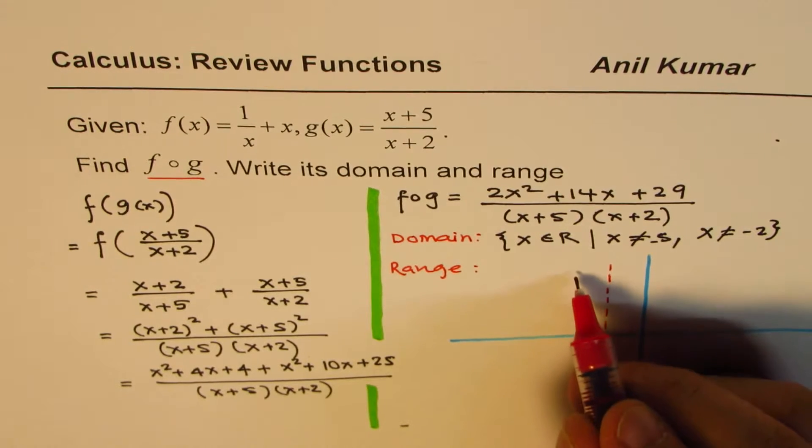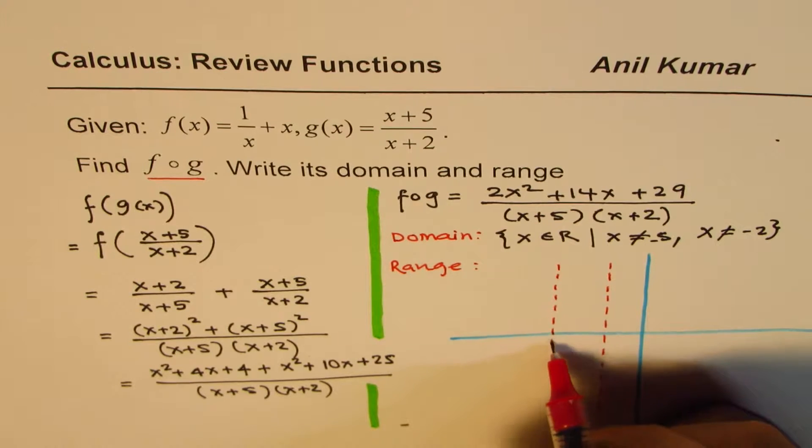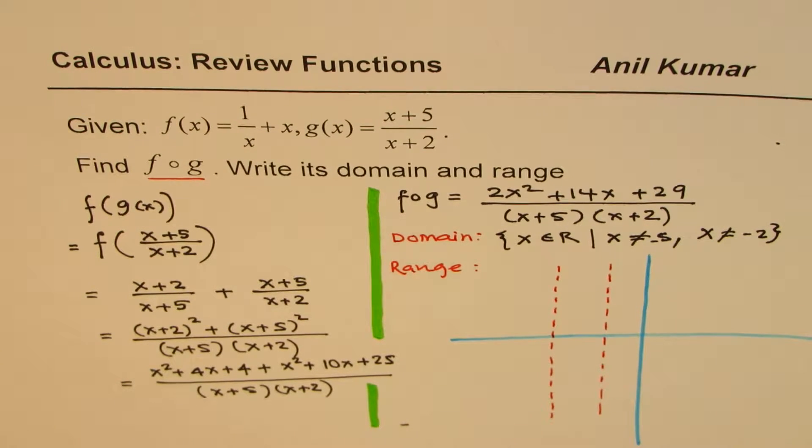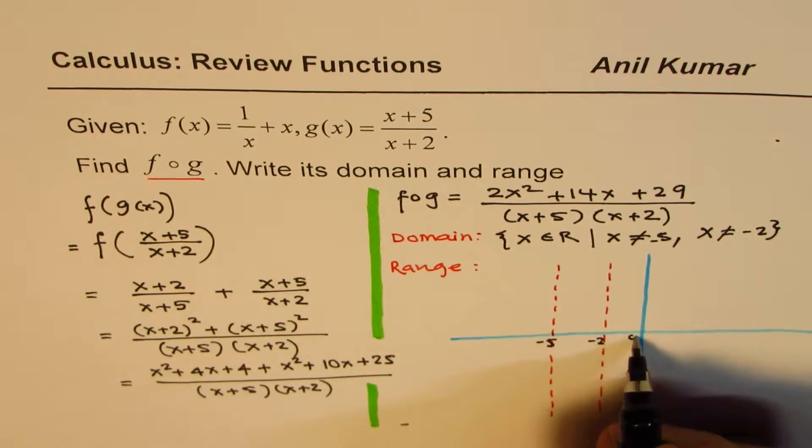So these are the vertical asymptotes, which will be at minus 2 and minus 5. So these are my vertical asymptotes. My drawings, as usual, are not to the scale, but they are fairly accurate to understand the concept.